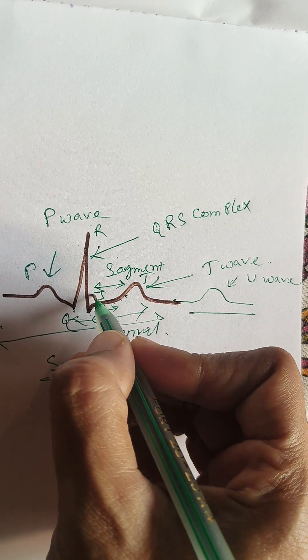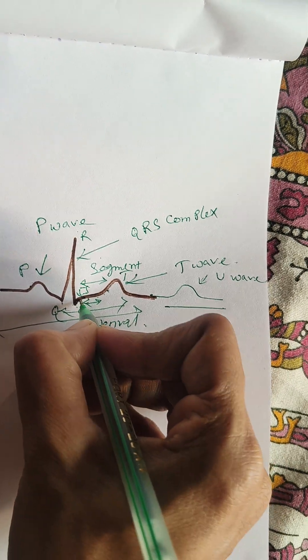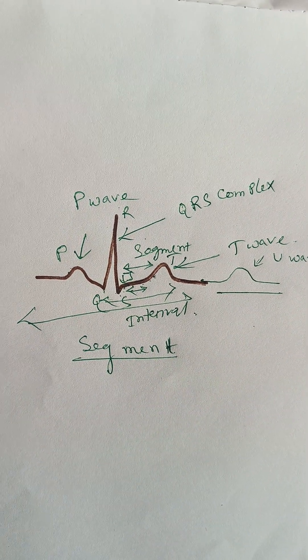So in the ST segment, this point is J point. This is the isometric line.